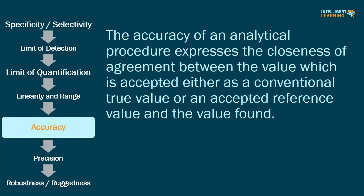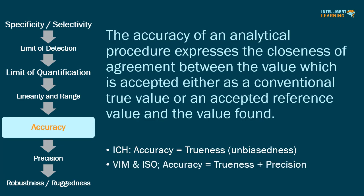As per ICH Q2 guidelines, the accuracy of an analytical procedure expresses the closeness of agreement between the value accepted as the conventional true value or accepted reference value and the value found. As per ICH, accuracy means trueness only (unbiasedness), while as per the International Vocabulary of Metrology (VIM) and ISO, accuracy has a different meaning — combining both trueness and precision.